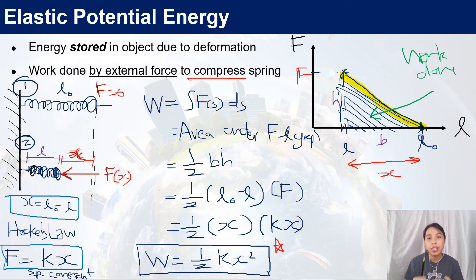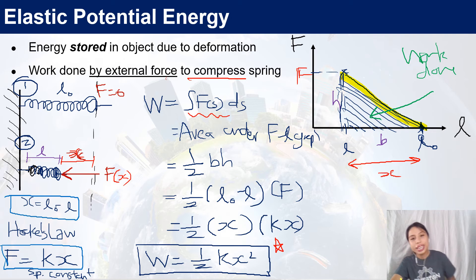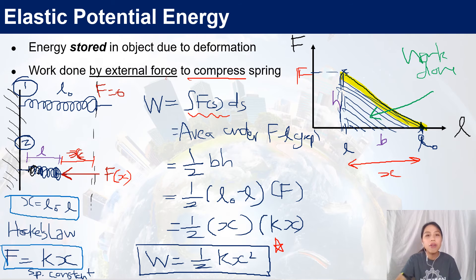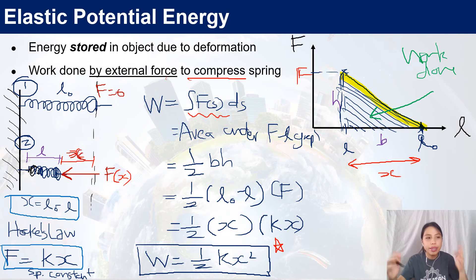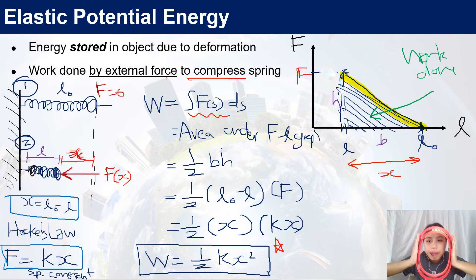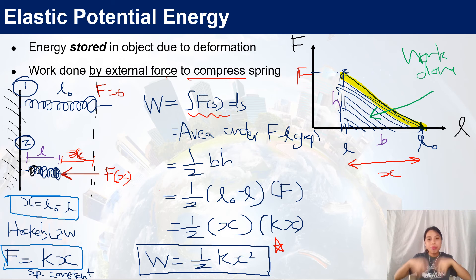This equation — half KX squared — is something you'll want to remember, but also make sure you know where it comes from. It comes from the area under the graph because the force is not constant, so we can't just say force times distance. We have to find the area under the graph. This is the whole idea of how to calculate elastic potential energy for springs and any object that can be squashed — even this eraser, if I squash it, it will deform and recoil like a spring.